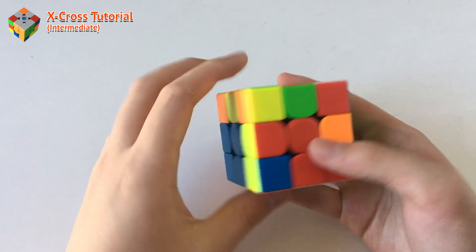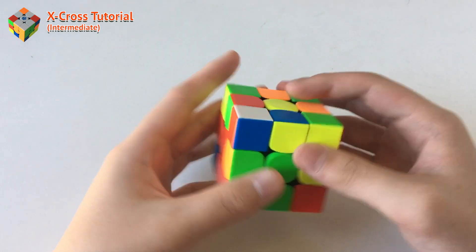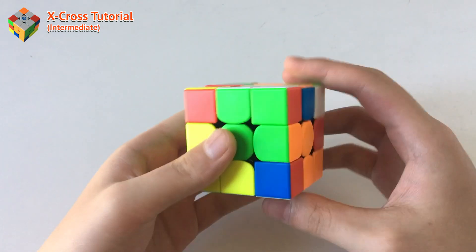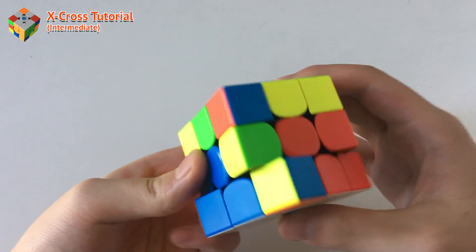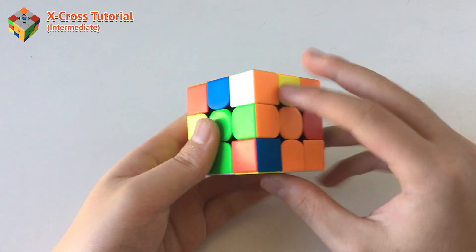So basically, as you can see right here, I can just move that over. And then we could do that. So therefore, we have another x-cross.